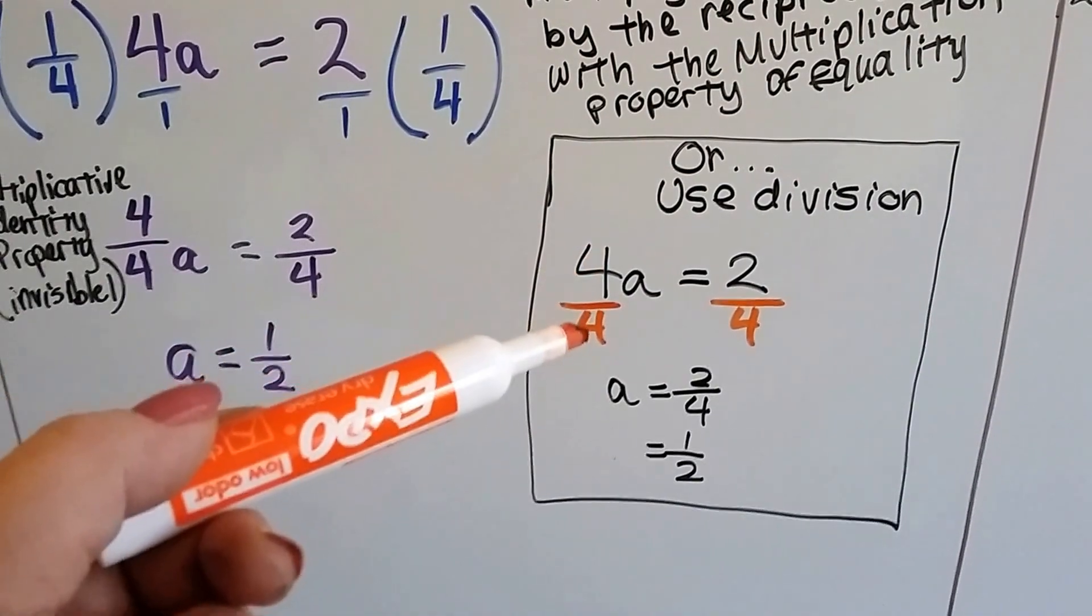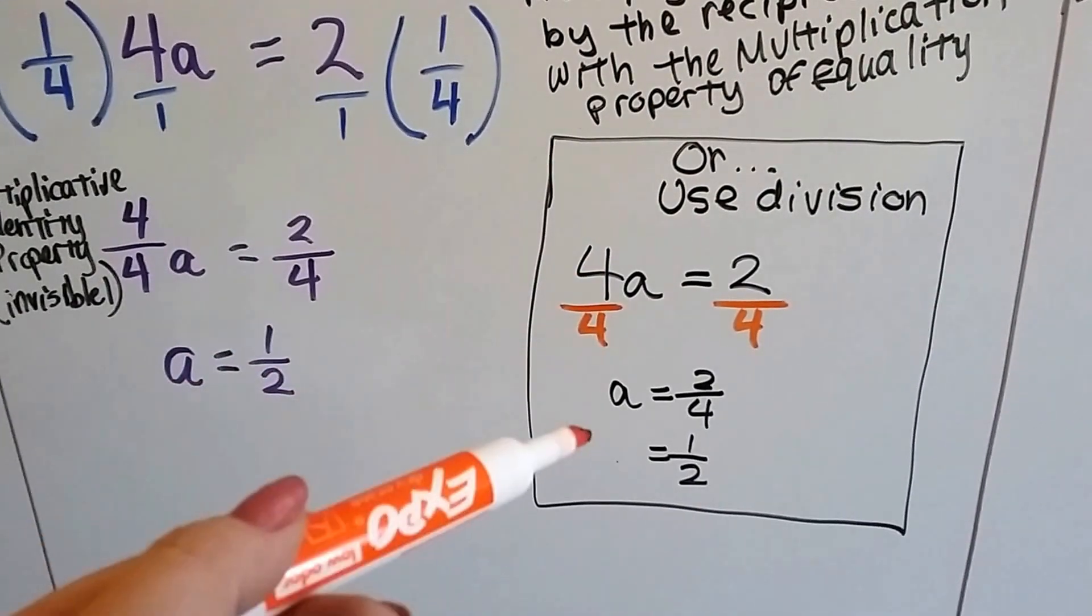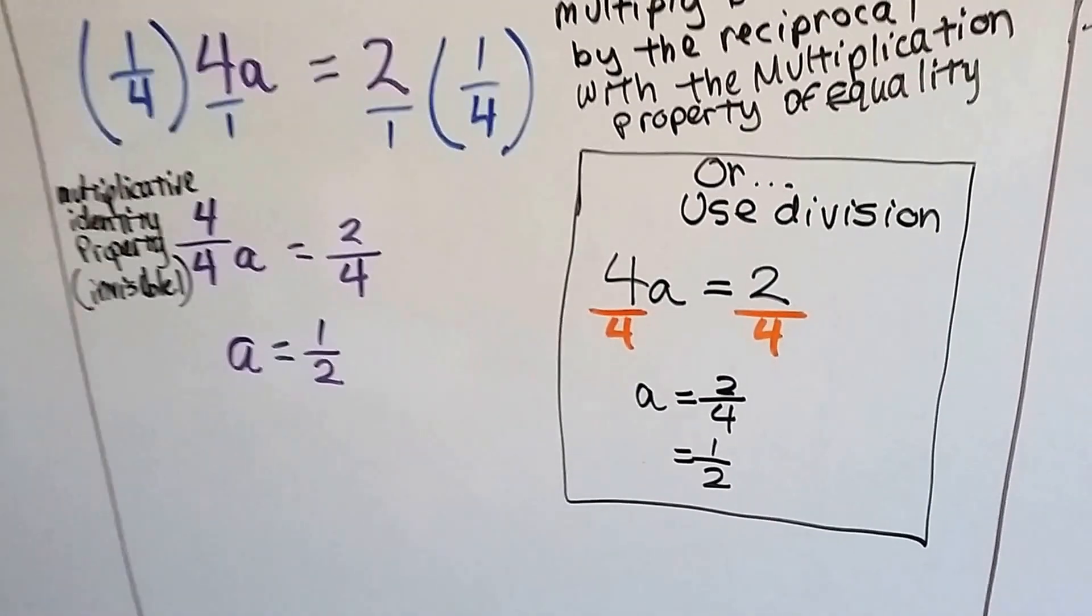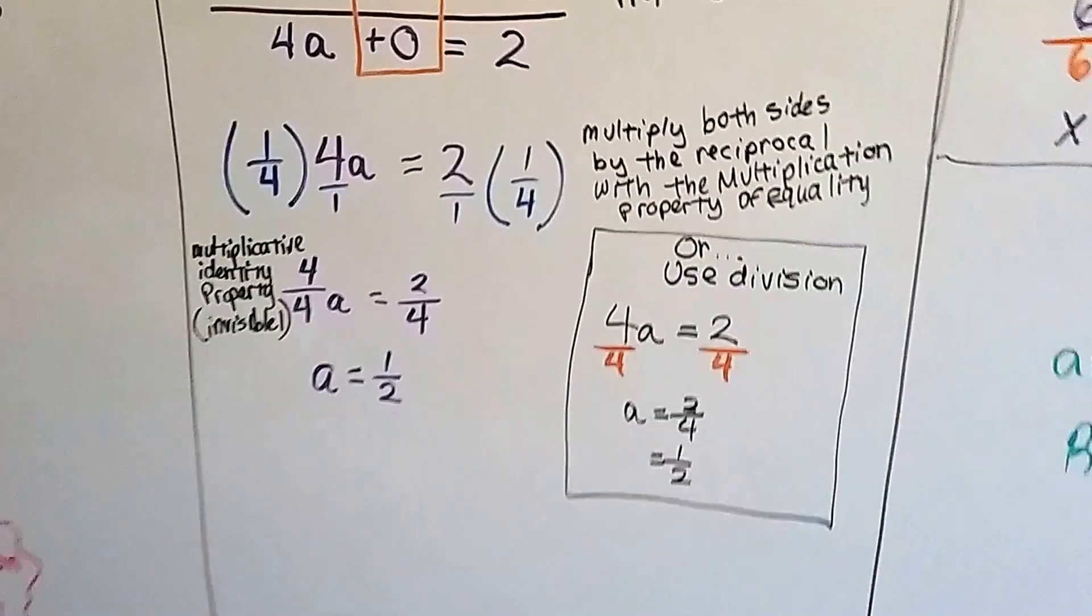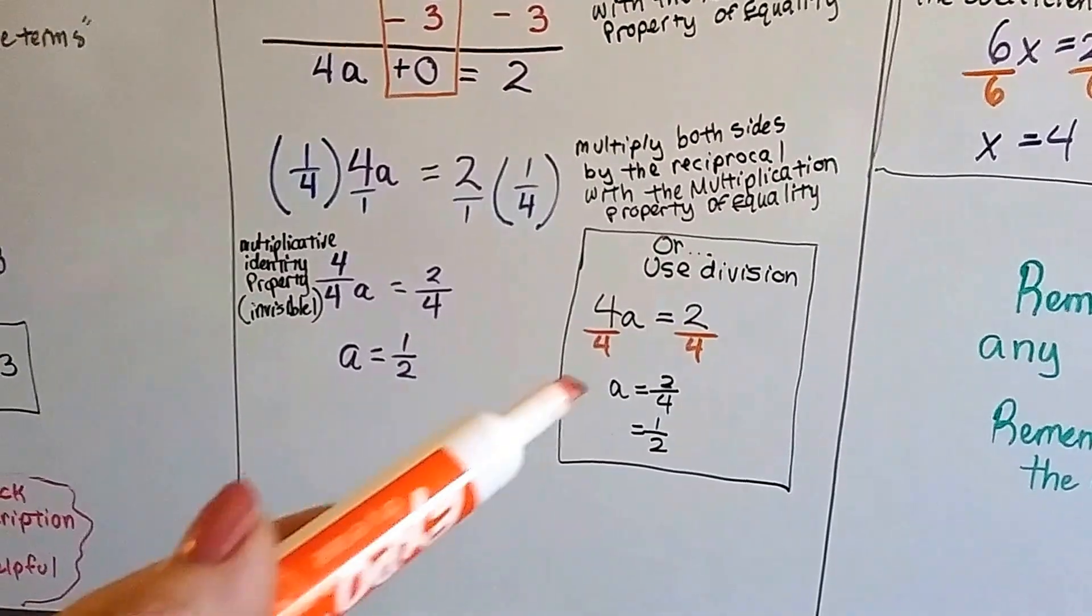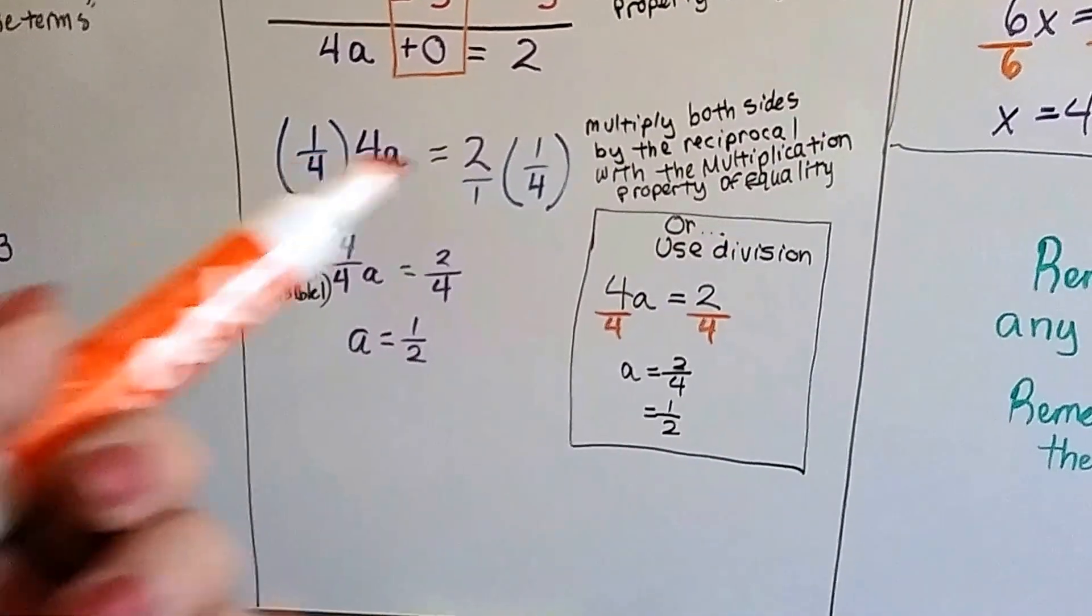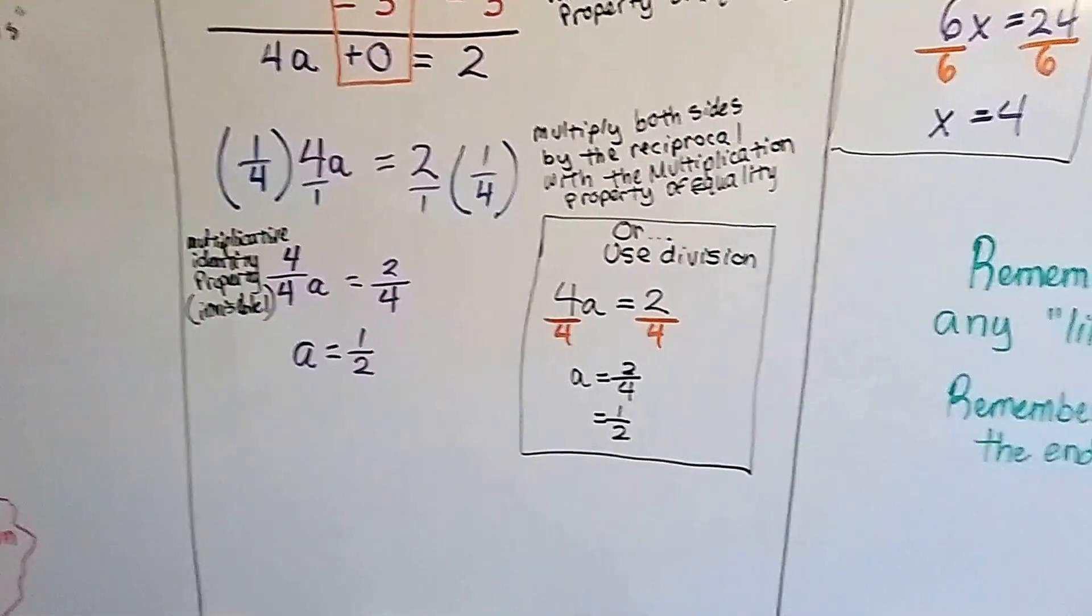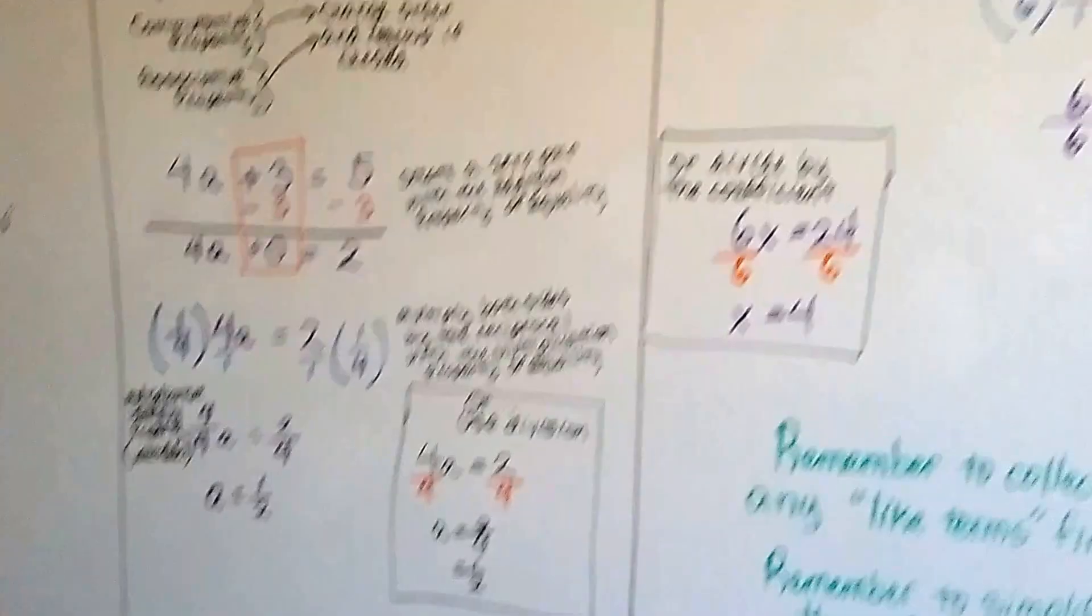And 4 divided by 4 gives us our friend the invisible 1, and 2 divided by 4 simplifies to one-half. So, because division and multiplication are the opposite operations, the inverse operations of each other, we could use division here instead of multiplication and a reciprocal. Skip some steps and go a little bit faster. Just make sure you know what you're doing before you do this.